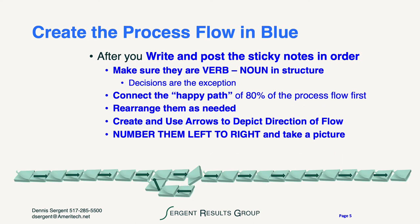Once we string together the sticky notes in order with decisions in this verb-noun structure, we want to make sure we review it with the participants as the happy path of their process — the way 80% or more of their process flows. We ask them to rearrange the steps until the subject matter experts can agree that this generally depicts the process. After that, we number them left to right and take a photograph — in case those sticky notes come unglued.